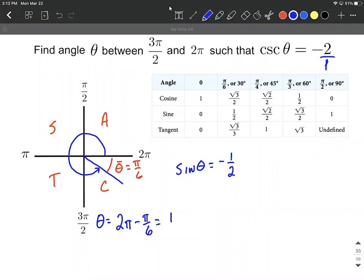So this can be written as 12 pi over six minus pi over six, which is going to be 11 pi over six, and that's the angle we're looking for.